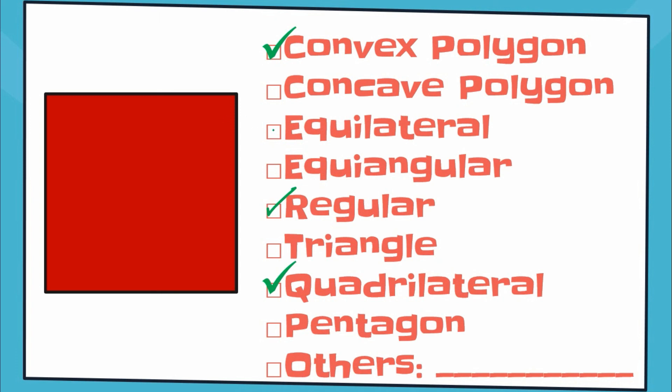Ma'am, can we call it equilateral? Usually, equilateral is classified when only the sides are equal. Same with equiangular when only the angles are equal. But since this is a square, therefore it's automatic, it's regular, because regular is equilateral and equiangular.